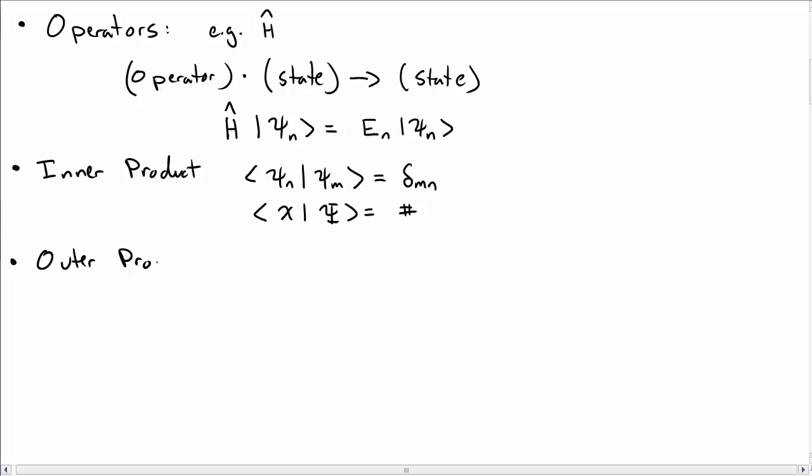In addition to the inner product, we can do something called an outer product. So an outer product would mean I would write two states, psi and chi, and this way is how I would multiply them. What in the world is this?